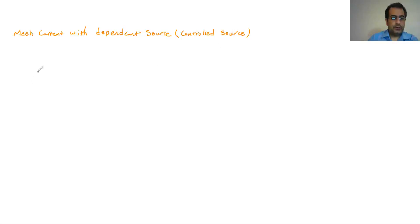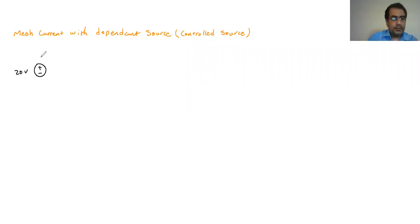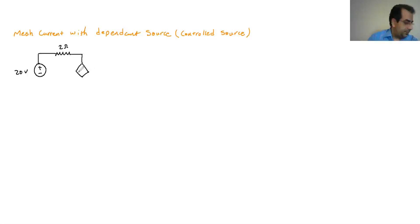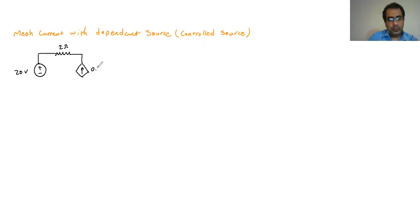Let's look at an example. Assume we have a circuit with a 20-volt battery and a 4-ohm resistor. Now assume we have a dependent current source here, and its current is 0.25 Vx.